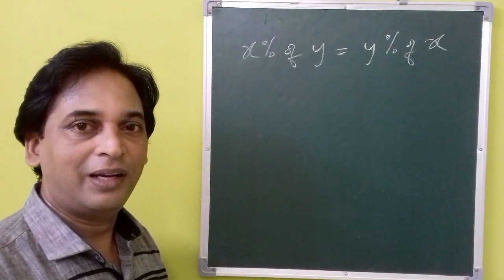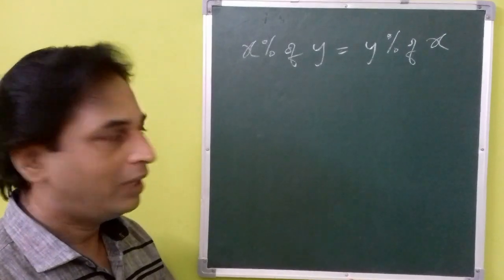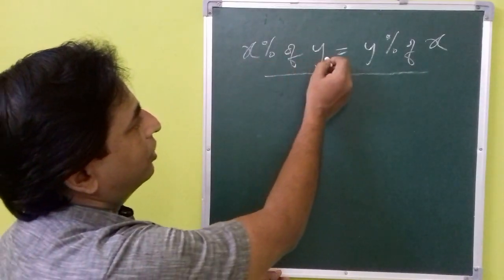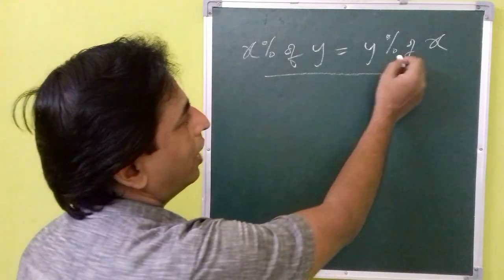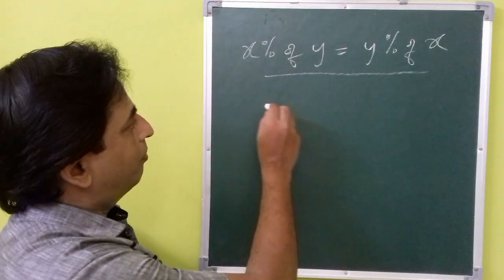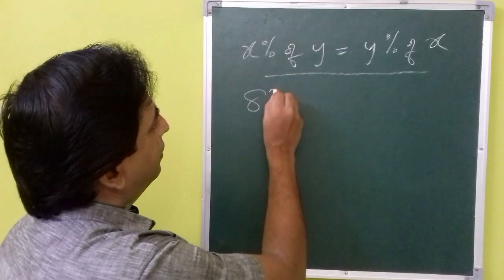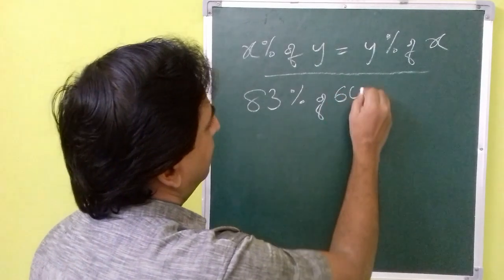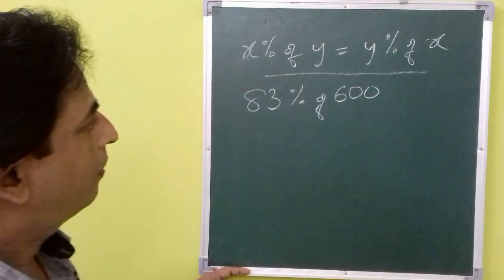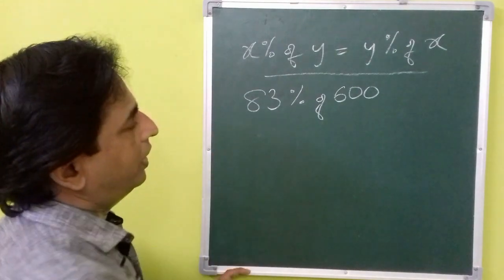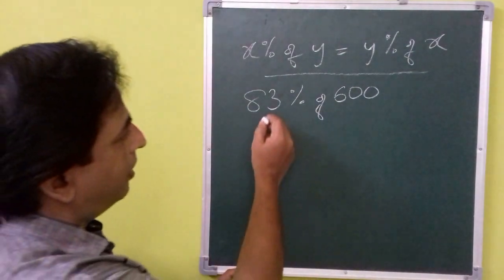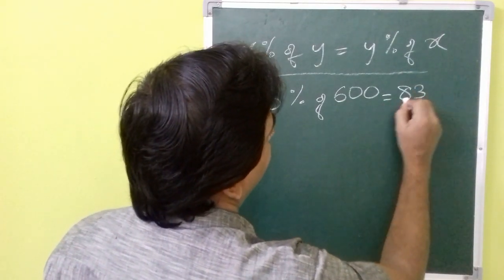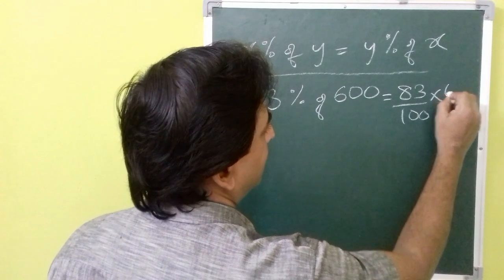Hi, this is Swamas, welcome to my channel. In today's video we will analyze this equation which says that x percentage of y is equal to y percent of x. For example, if we take 83 percent of 600, is it equal to 600 percent of 83? So let us examine: 83 percent of 600 is 83 percent of 600.